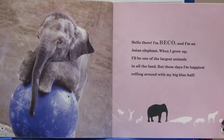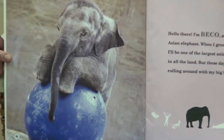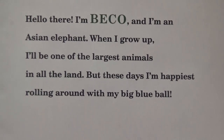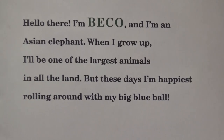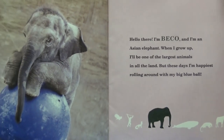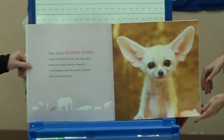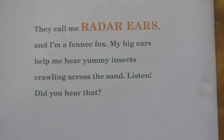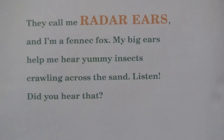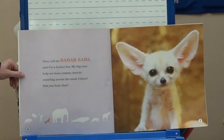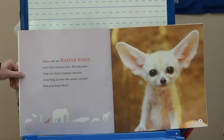Remember, kindergarten, while I'm reading, think about what you think the main idea is in our story. 'Hello there. I'm Beko, and I'm an Asian elephant. When I grow up, I'll be one of the largest animals in all the land. But these days, I'm happiest rolling around with my big blue ball.' 'They call me radar ears, and I'm a phoenix fox. My big ears help me hear yummy insects crawling across the sand.' Why does the phoenix fox hear so well? Because he has those great big ears — that's a detail about our fox.